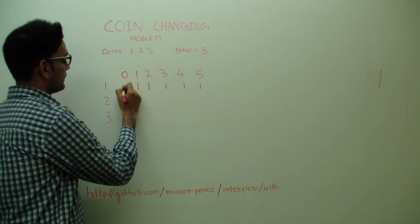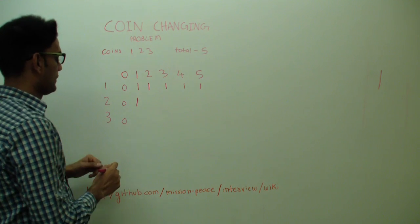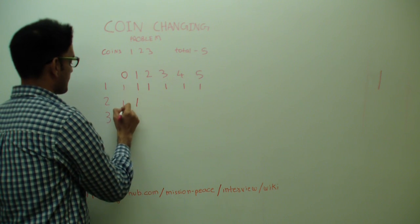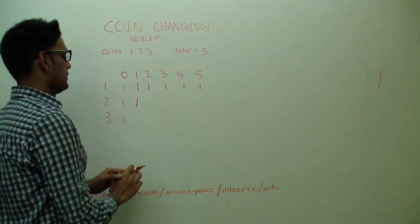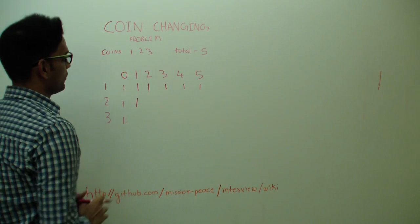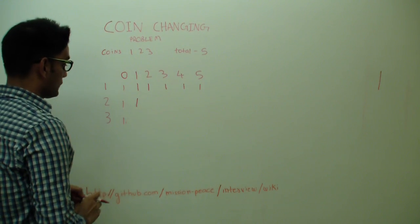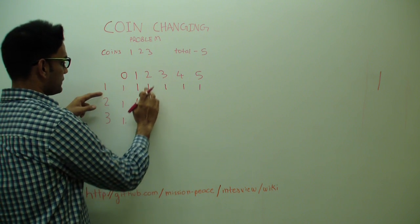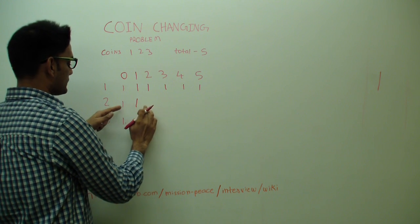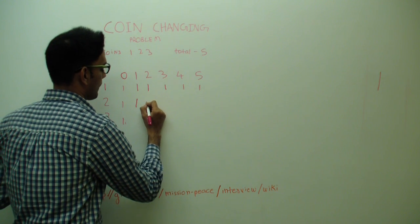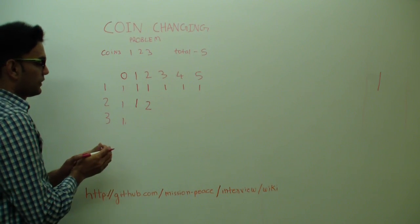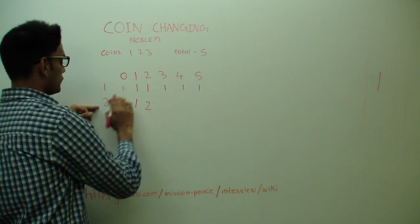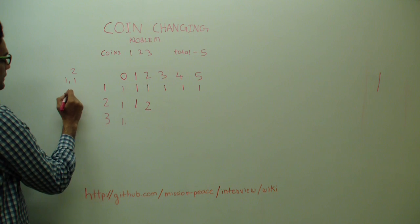Now for total of 2 with coins 1 and 2: the answer is all the ways you can get 2 using coin 1 only, plus all the ways you can get 2 going back 2 steps to this point. So the addition of these two gives us 2. Basically you're saying 1+1 is one way, and then just using coin 2 is another way.